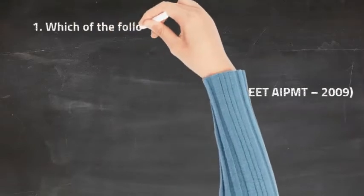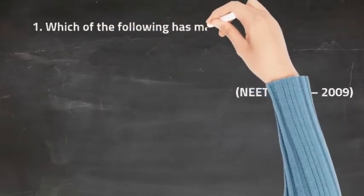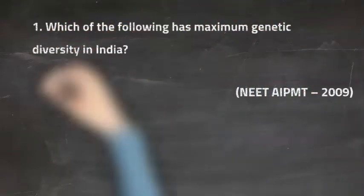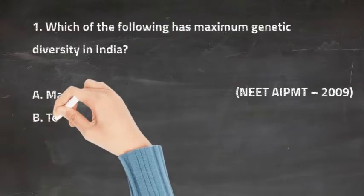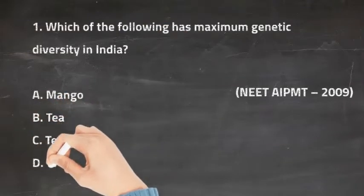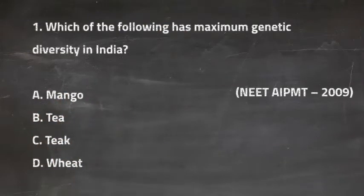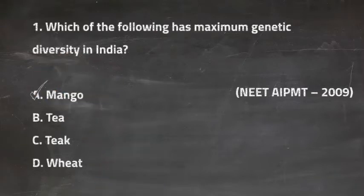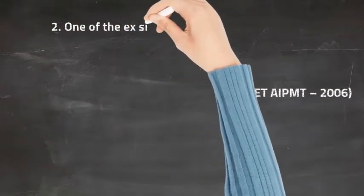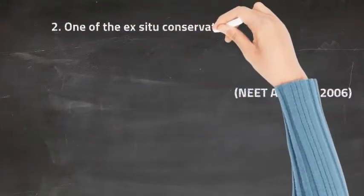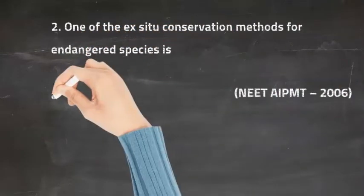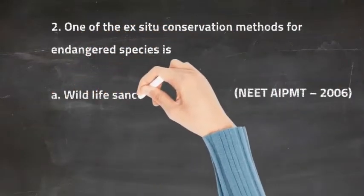The first question is: which of the following has maximum genetic diversity in India? Option A is Mango, Option B is Tea, Option C is Teak, and Option D is Wheat. The right answer is Option A, Mango.